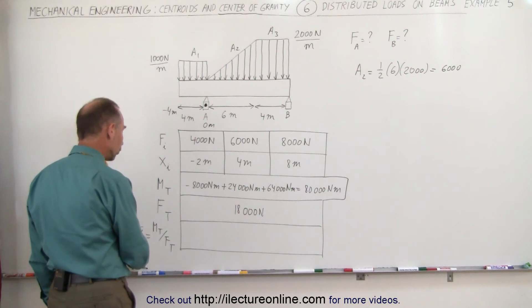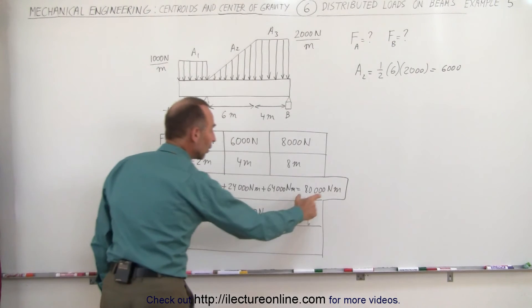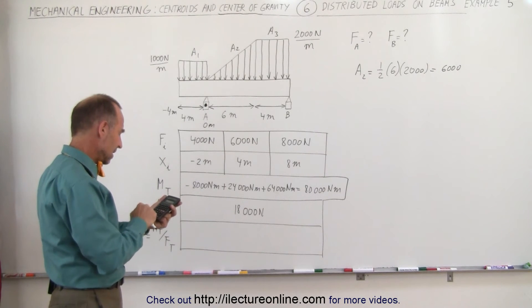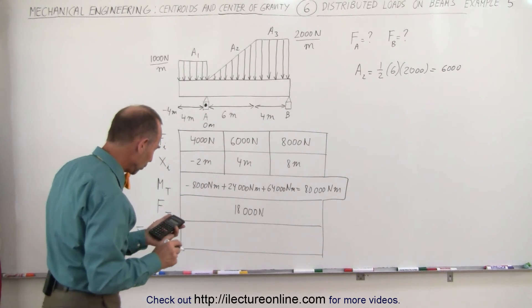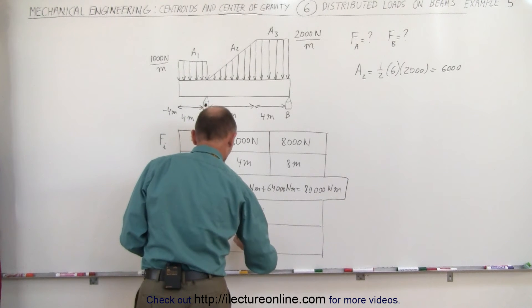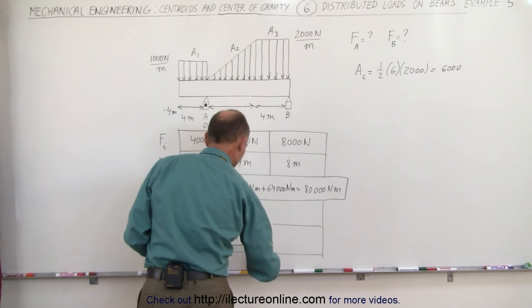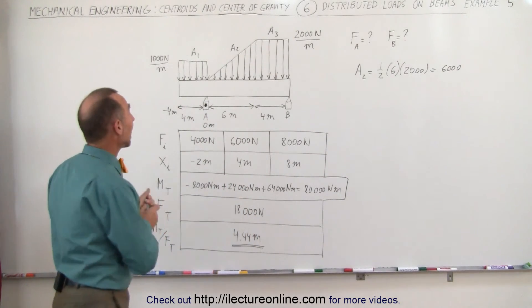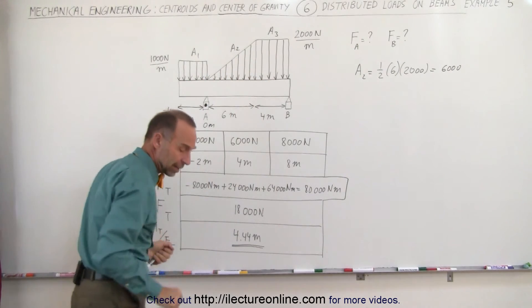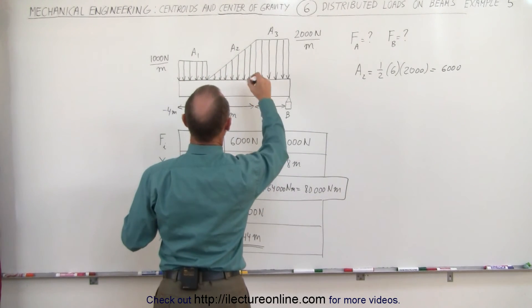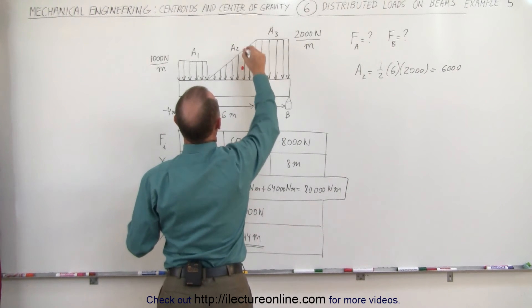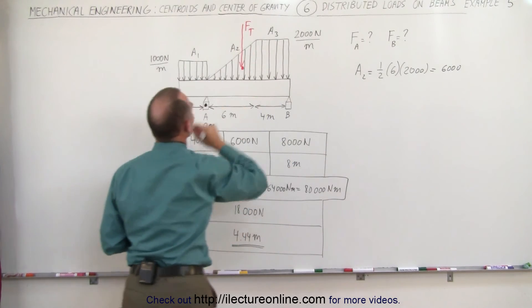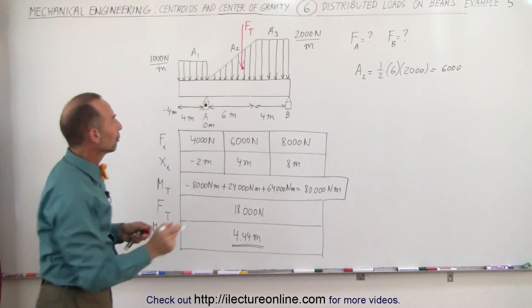To find the x-coordinate of the centroid, we divide the total moment by the total force: 80,000 divided by 18,000, or 80 divided by 18, gives us 4.44 meters. This is the centroid of the entire load distribution, taking into account the negative moment on the left and positive moments on the right. 4.44 meters puts the resultant force right about there, giving us the total load acting at that point — the moment relative to point A.